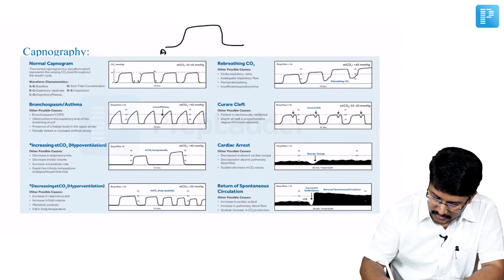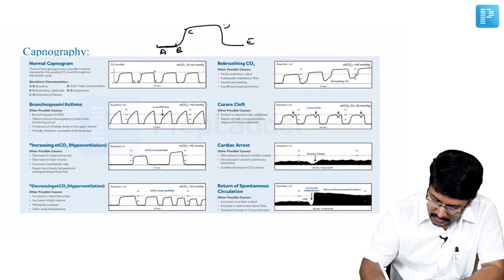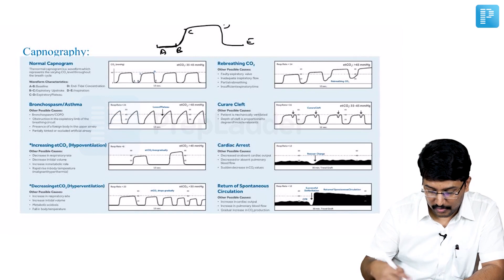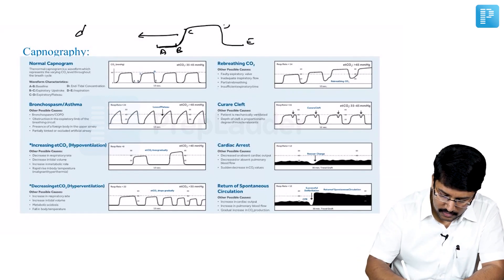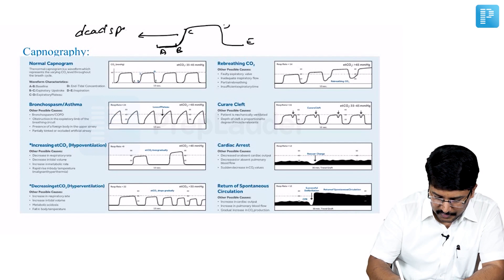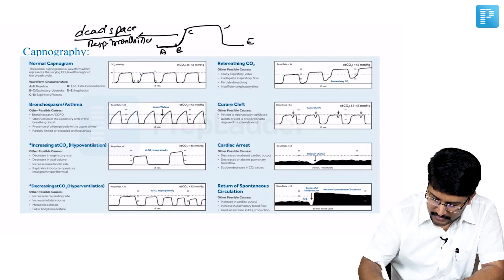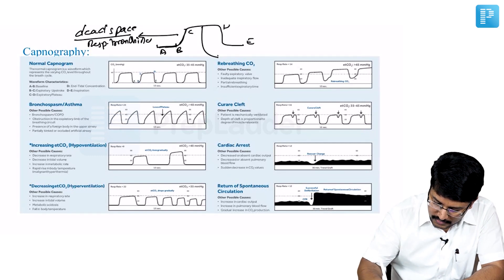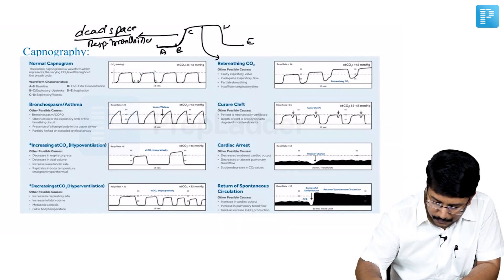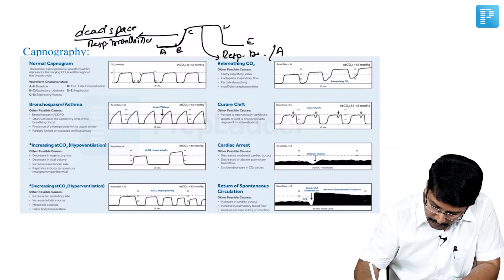I can say this as A, B, C, D and E. So this A to B is representing baseline. This B to C is actually representing your carbon dioxide exhalation mainly from dead space. Dead space is the main component here and to some extent respiratory bronchioles. And this C to D is mainly comprising of your exhaled carbon dioxide from to some extent respiratory bronchioles, but main component is alveolar ventilation.